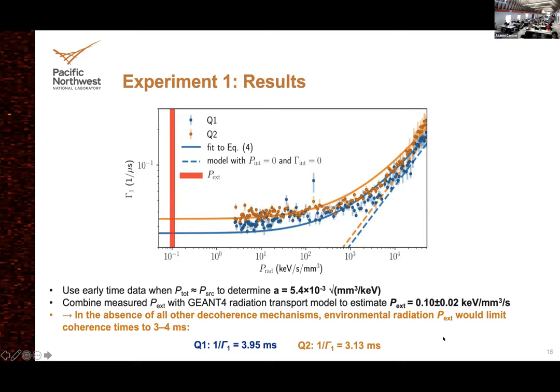Another conclusion: the estimated power from just being in a lab on the surface is not the current limit on coherence time. Something else is really the current limit — radiation might be the thing after that. Remember, we're currently at about 100 microseconds; this comes in at the few-millisecond scale.